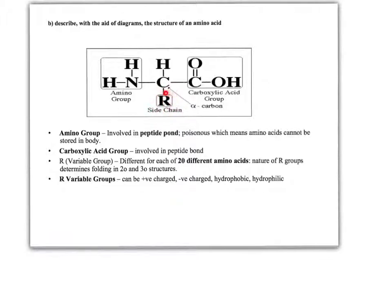There are 20 different amino acids, and they all differ from each other in that they have different R groups. Some of these R groups are ionic, some are hydrophobic, some are very simple. The simplest one is glycine, where the R group is just a hydrogen atom. So: amino group — the poisonous bit; carboxylic acid group; and the R group, which is different from amino acid to amino acid.